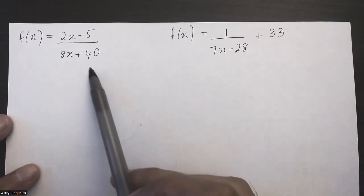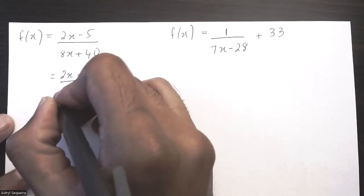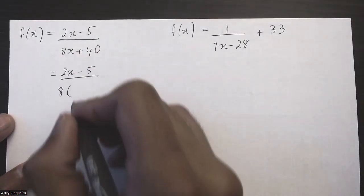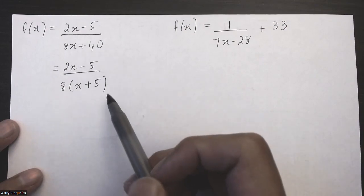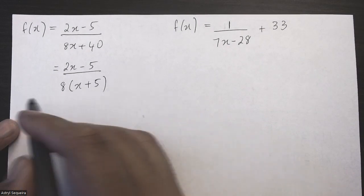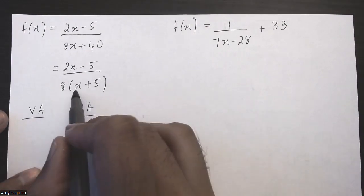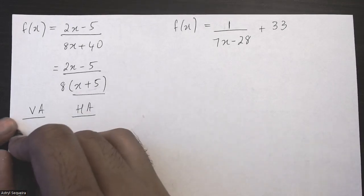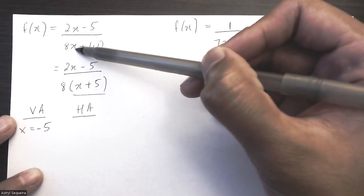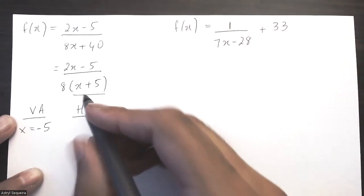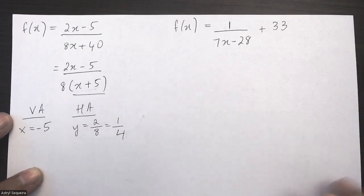The third question is a rational function — a linear function divided by a linear function. First, factor and check for holes: factoring the 8 on the bottom leaves x plus 5, and nothing cancels, so there are no holes. For the vertical asymptote, the solution of the denominator gives x equals negative 5. For the horizontal asymptote, since the degrees are equal, divide the coefficients: y equals 2 over 8, which is 1 over 4.